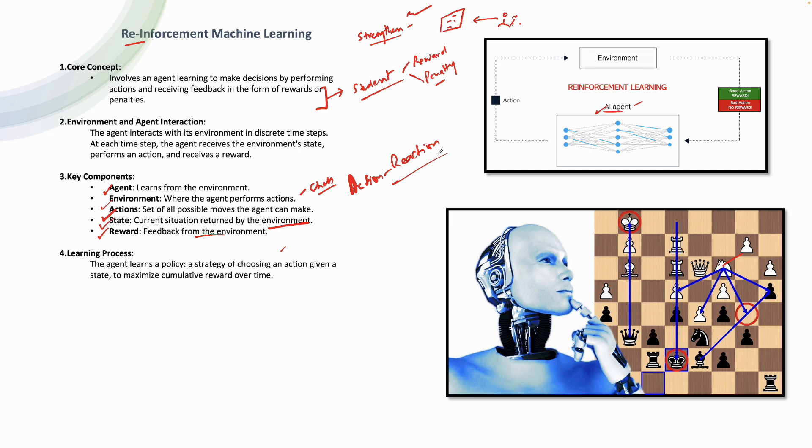The learning process is pretty simple. The agent is learning the strategy of choosing an action given a state to maximize the cumulative reward over time. So the aim is to get maximum rewards. If you are achieving maximum amount of rewards, it means you are in the right direction.